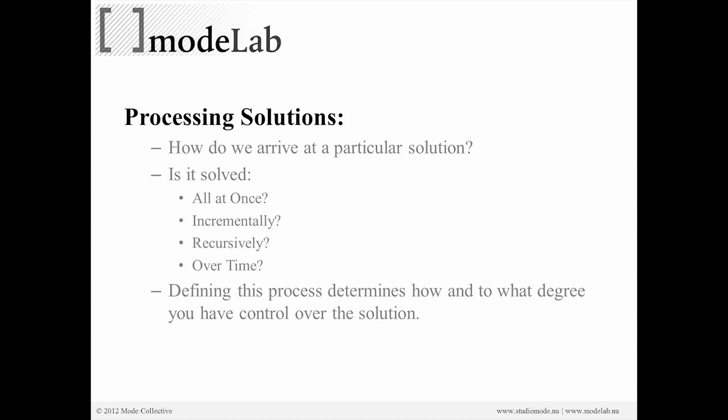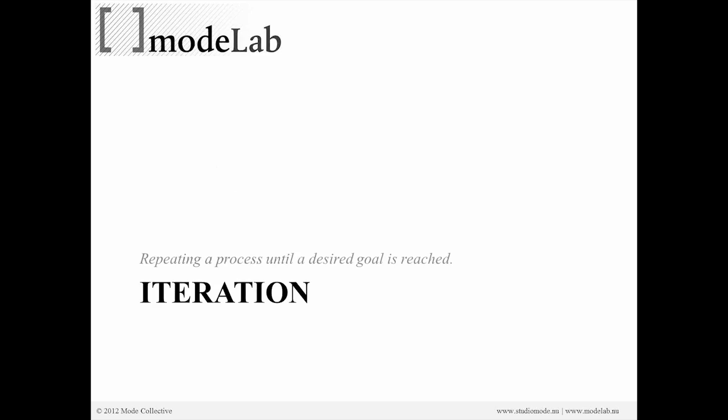Grasshopper, because it's a parametric environment, its logic is linear, and it tries to process everything all at once. Because we're using scripts inside of Grasshopper, we can change exactly how Grasshopper processes that solution. The first thing we're going to look at in terms of controlling how a process happens is going to be through iteration.